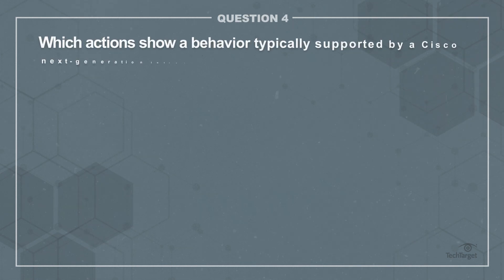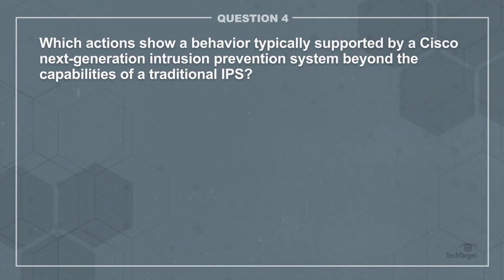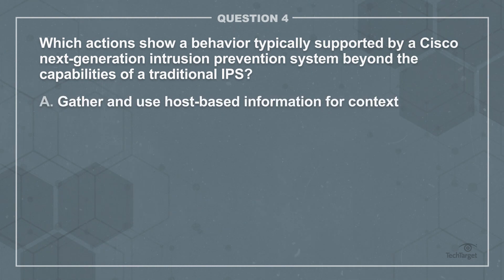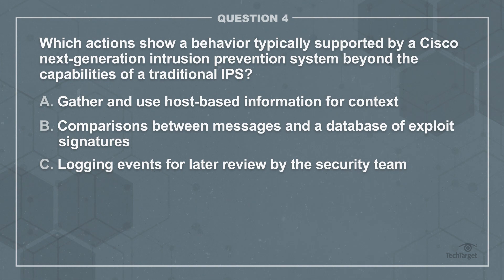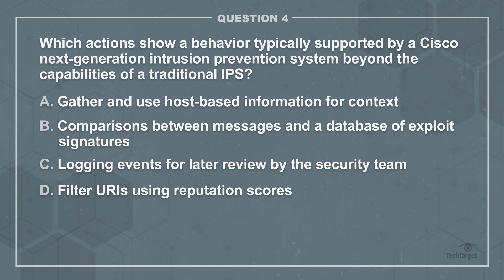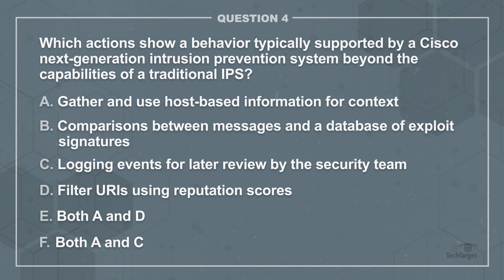Question 4. Which actions show a behavior typically supported by a Cisco Next Generation Intrusion Prevention System, beyond the capabilities of a traditional IPS? A: Gather and use host-based information for context. B: Comparisons between messages in a database of exploit signatures. C: Logging events for later review by the security team. D: Filter URIs using reputation scores. E: Both A and D. Or F: Both A and C.